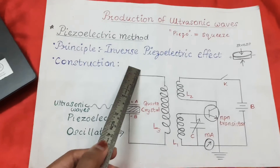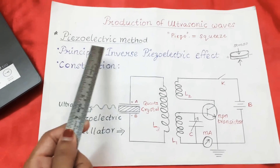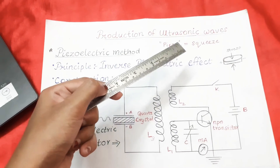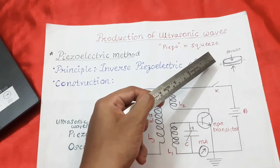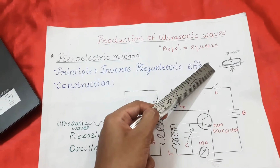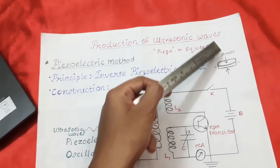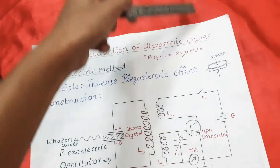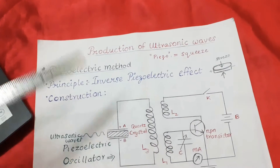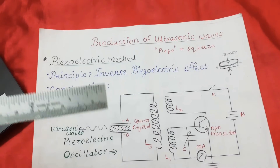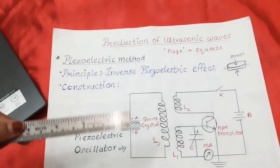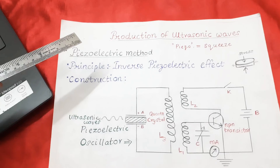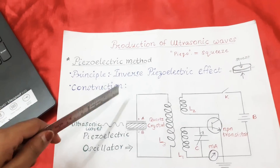What we are making use of here is the inverse, or converse, of this effect, which is called the inverse piezoelectric effect. When an alternating EMF is applied to the opposite faces of a suitably cut quartz crystal, it will undergo contraction or expansion alternately in the perpendicular direction along its mechanical axis. Thus an alternating EMF is used to vibrate the piezoelectric crystal so that it vibrates at ultrasonic frequency, and we obtain ultrasonic waves.